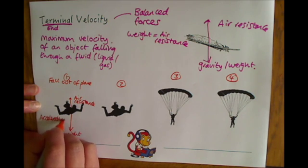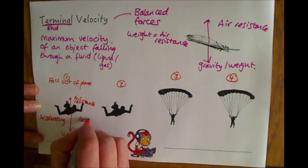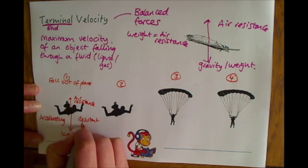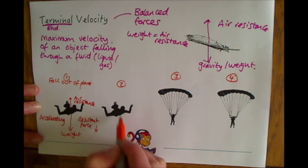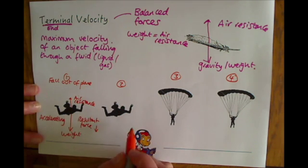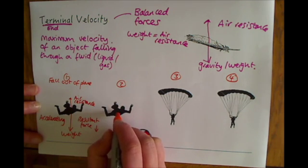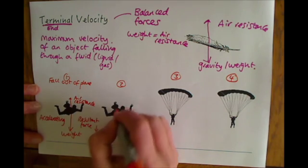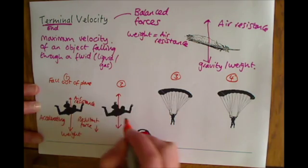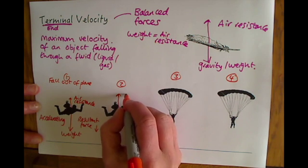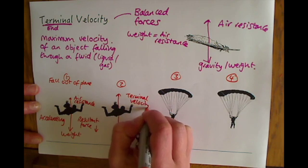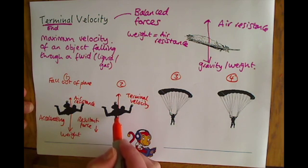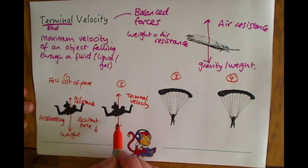He's accelerating with a resultant force downwards. However, as speed increases, the air resistance will increase as well. So as he speeds up through the air, you'll get to a stage where you then have balanced forces. At this point, the parachutist will reach his terminal velocity. Without a parachute on, there is a maximum speed that this parachutist will fall through the air when the weight and the air resistance are now balanced.